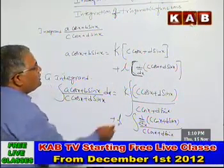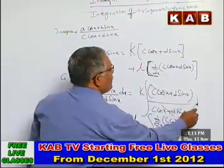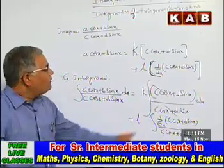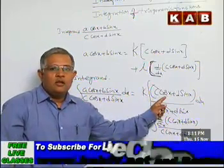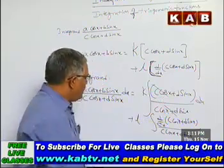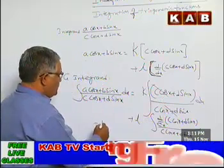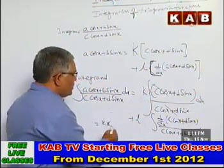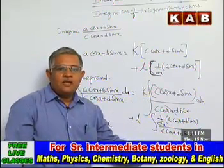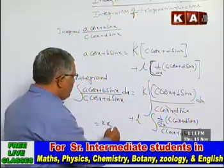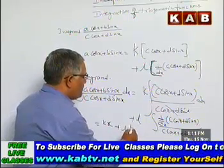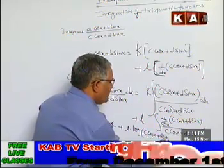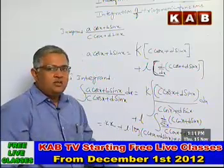The first part simplifies to k × integral of 1 dx = kx. The second part is l × integral of f'(x)/f(x) dx = l × log|c cos x + d sin x| + c, since f'(x)/f(x) integrates to log|f(x)|.